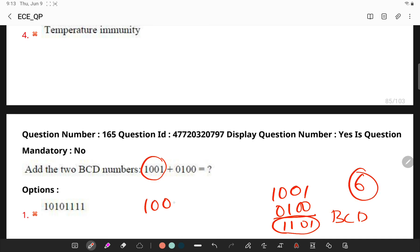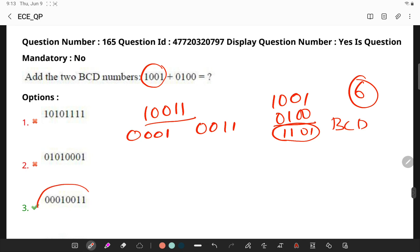So, we get 10011 and you can write this as 001, 0011. So, if you see the options, this is the right answer. That's right. Okay. Go ahead!